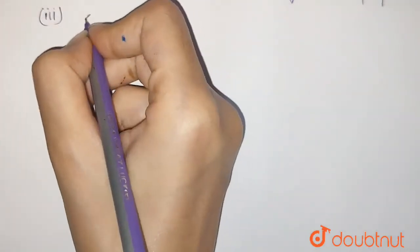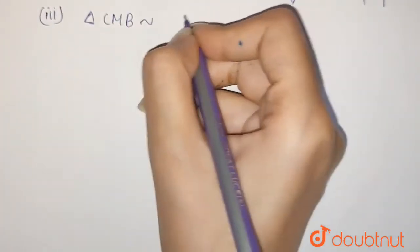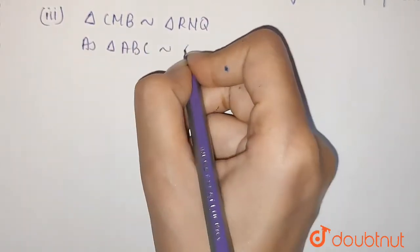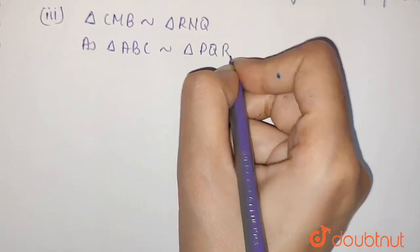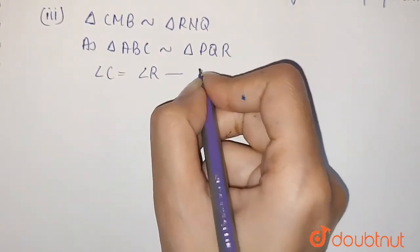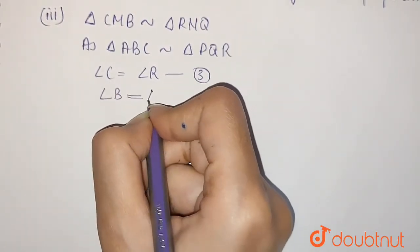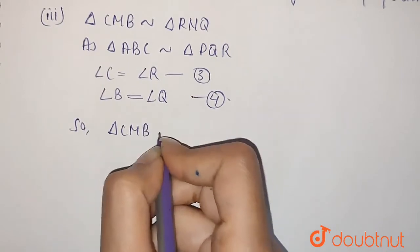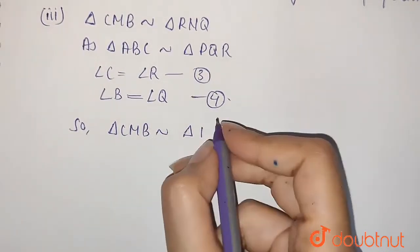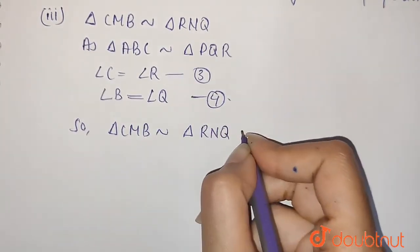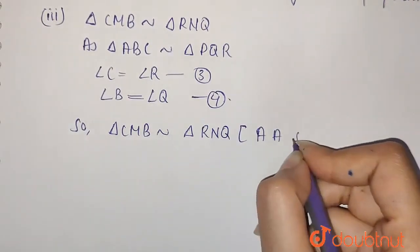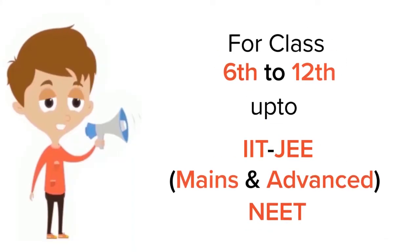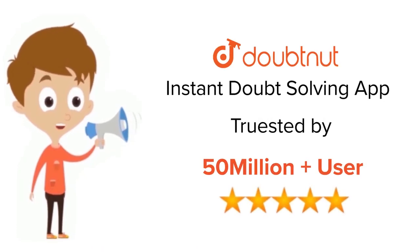Now, we have to prove triangle CMB is similar to triangle RNQ. So, triangle CMB is similar to triangle RNQ by Angle-Angle similarity. Thank you.